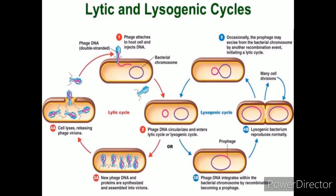Viral DNA replication occurs separately from host DNA replication in the lytic cycle, but in the lysogenic cycle, viral DNA replication occurs along with host DNA replication. The productivity of viral proteins is low in the lysogenic cycle. Host cellular mechanism is completely hijacked by the viral DNA in the lytic cycle, but in the lysogenic cycle, the host cellular mechanism remains unaffected. The lytic cycle is immediate and completed within a short period of time, whereas the lysogenic cycle takes a longer period. Symptoms of viral infection can be observed in the lytic cycle, whereas the lysogenic cycle is a non-infective cycle that doesn't result in symptoms.